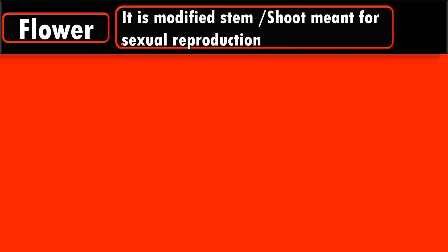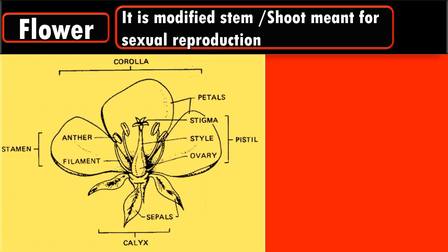In angiosperms, sexual reproduction occurs with the help of a flower. We can define flower as a modified stem which is meant for sexual reproduction. Now let us talk about various parts of the flower.